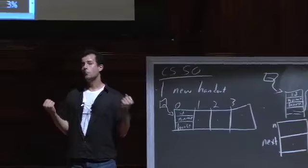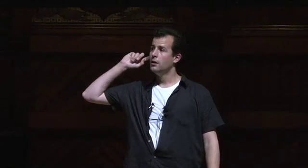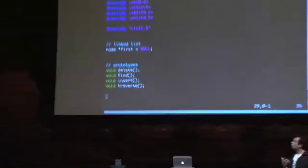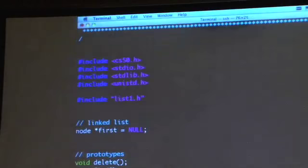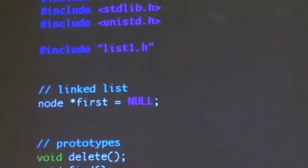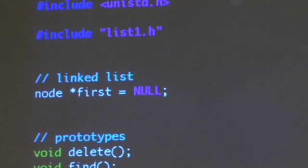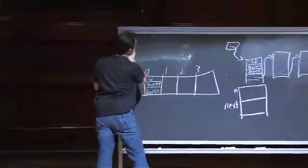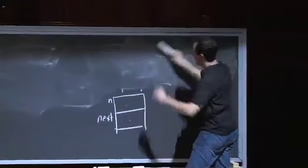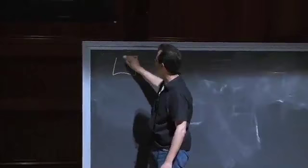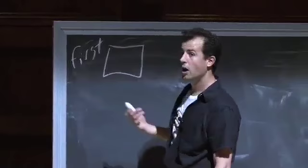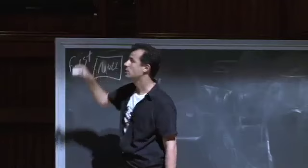It looks like in this program we've decided globally to declare a pointer called first, of type node star. That just means this thing holds an address, and the thing it's going to point to is going to be a node. We initialize it to null — in the context of a data structure like this, if we simply want to create a new list, we won't have had occasion to call malloc yet, so we won't have any valid addresses. We declare 32 bits of memory, call it first, and initialize it to null.